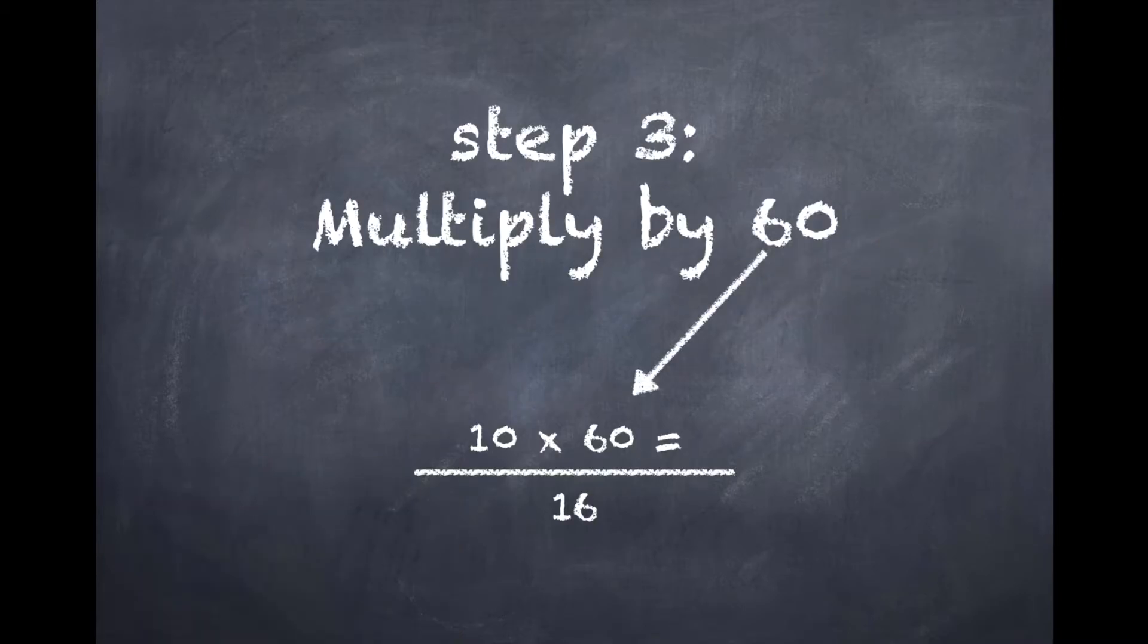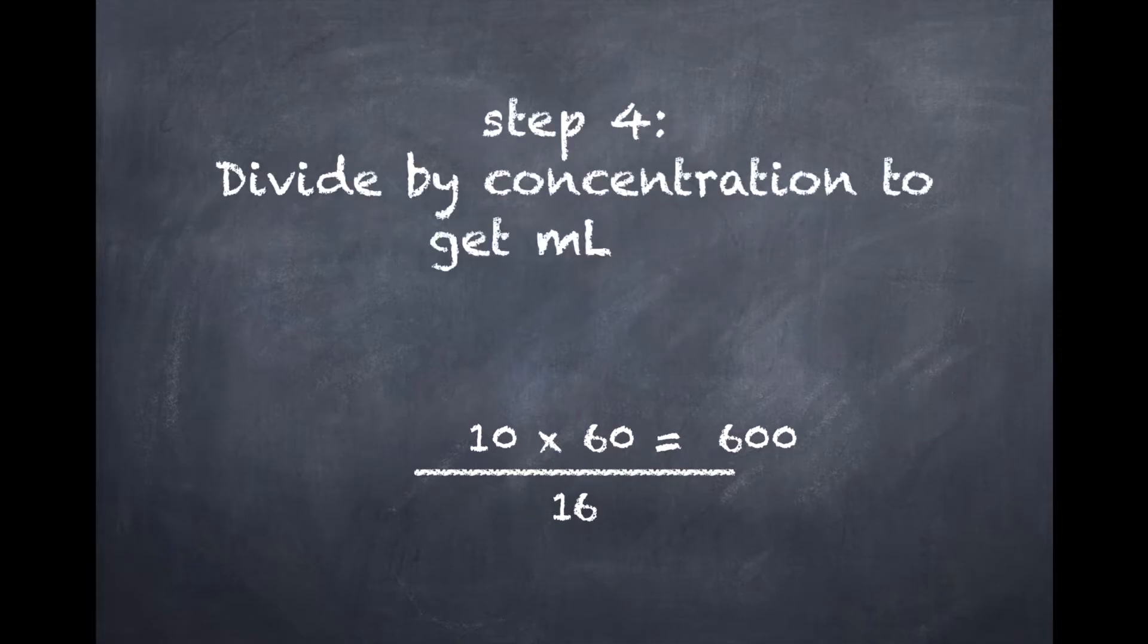Step number three is going to be to multiply times our minute. And that'll give us a number that we carry down to the bottom in step number four. Step number four is to take that number and divide it by our concentration. And that will give us our milliliters per hour, that would be what we would set our pump to.